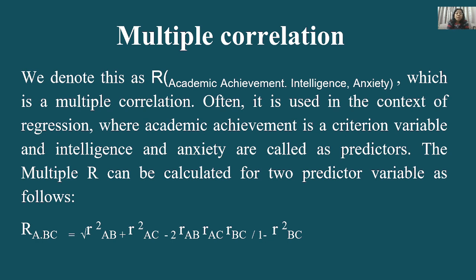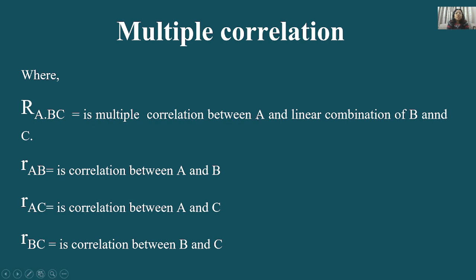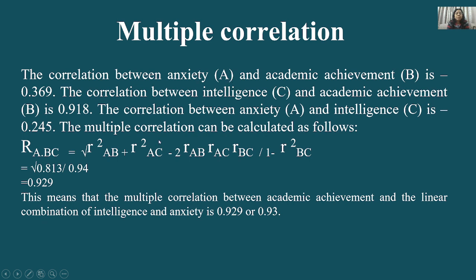R_A.BC denotes the multiple correlation between A and the linear combination of B and C. R_AB is the correlation between A and B, R_AC is correlation between A and C, and R_BC is correlation between B and C. Substituting all known values gives a result of 0.929 — highly positive. This means the multiple correlation between academic achievement and the linear combination of intelligence and anxiety is 0.93, indicating a strong relationship.